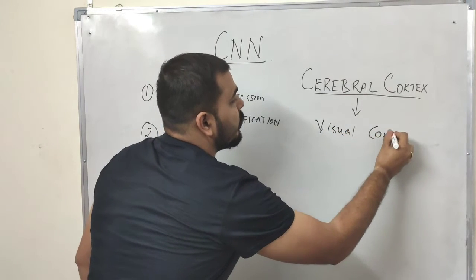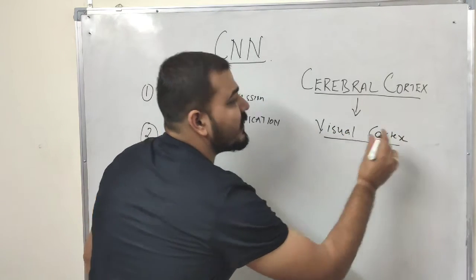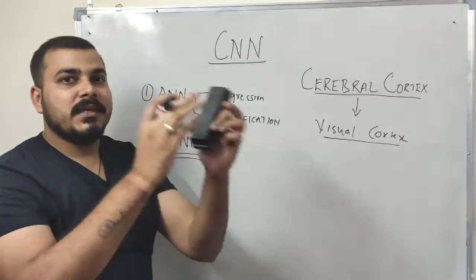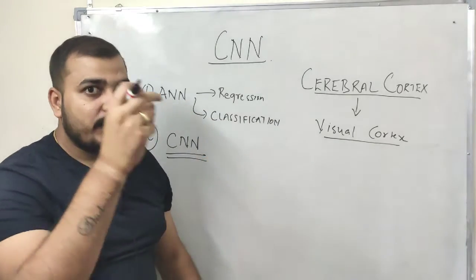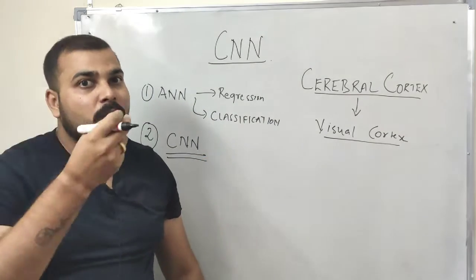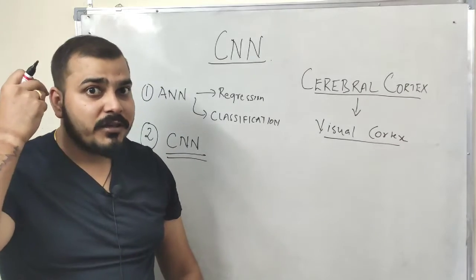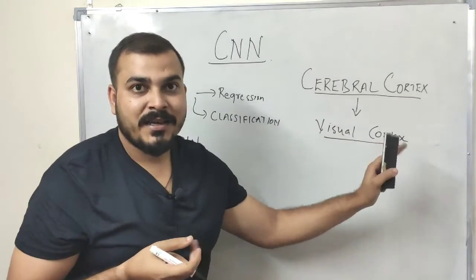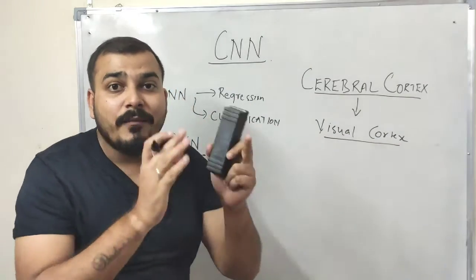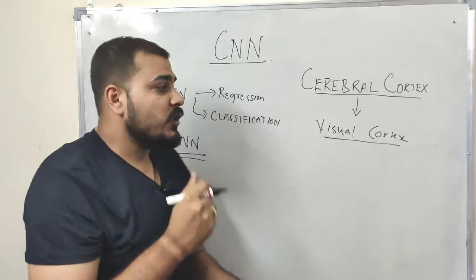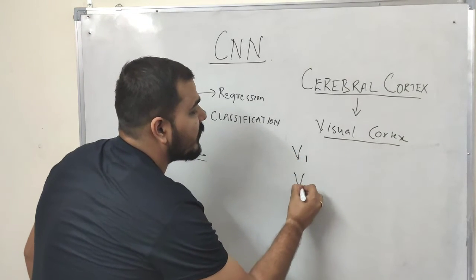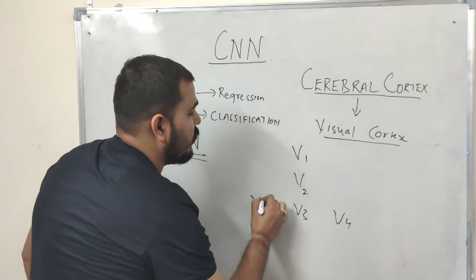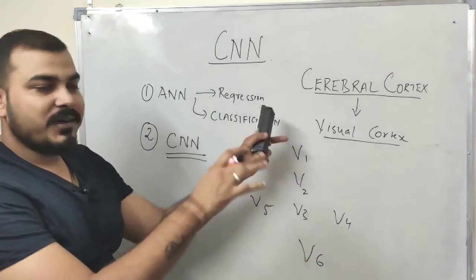The visual cortex is basically responsible for seeing images. Suppose I am seeing a cat — that information passes through my sensory organs, that is my eyes, then it passes through various neurons and reaches this region where the visual cortex is. In the visual cortex you also have multiple layers: V1, V2, V3, V4, V5, and V6.